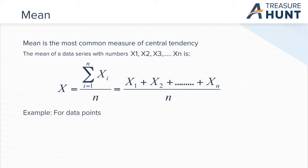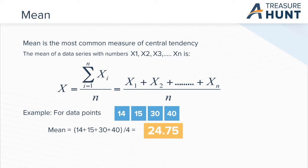Try this example. What is the mean for data points 14, 15, 30, and 40? To calculate the mean, first add the numbers 14, 15, 30, and 40. Now divide this sum by 4, the total number of data points in the data set. You should get the answer 24.75.